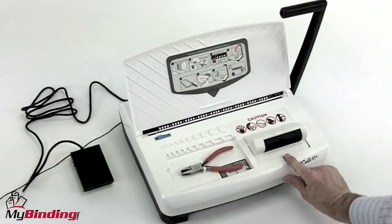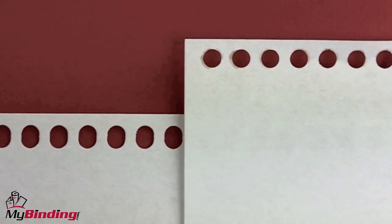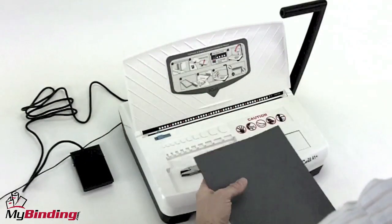Everything is here. Electronic inserter, foot pedal, puncher, and coil capping pliers. The Plus refers to the oval hole punched, easier to insert the wire and bind larger books.